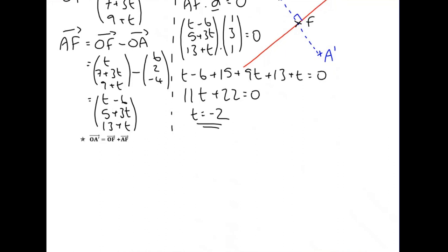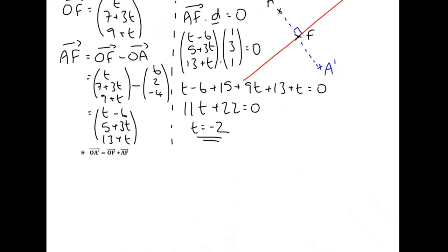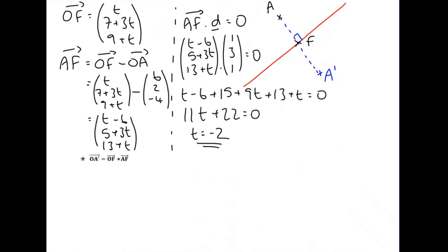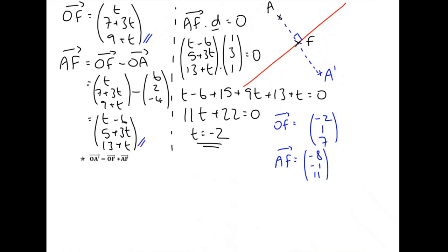We can get vectors OF and AF by substituting T back in. So OF is (minus 2, 1, 7) when we put T = minus 2 in. And AF, substituting minus 2 in, gives (minus 8, minus 1, 11).